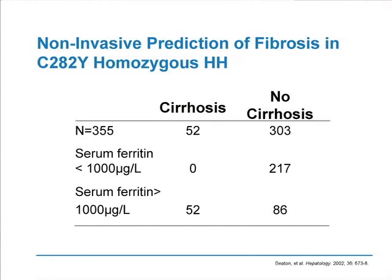The prediction of cirrhosis from serum ferritin is a very important finding. In 355 individuals homozygous for the C282Y mutation, a serum ferritin less than 1,000 was associated with no cases of cirrhosis at all. On the other hand, with serum ferritin greater than 1,000, there is approximately a 50-50 chance of having fibrosis and in some cases cirrhosis. It is the negative predictive value of the lower serum ferritin that is important in excluding the need to proceed to liver biopsy.